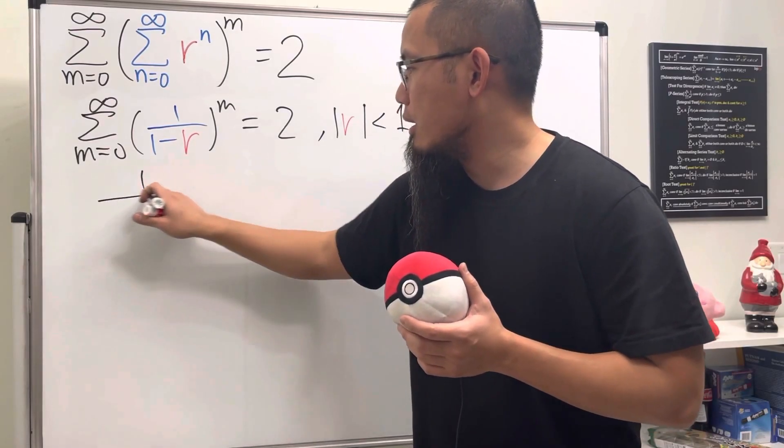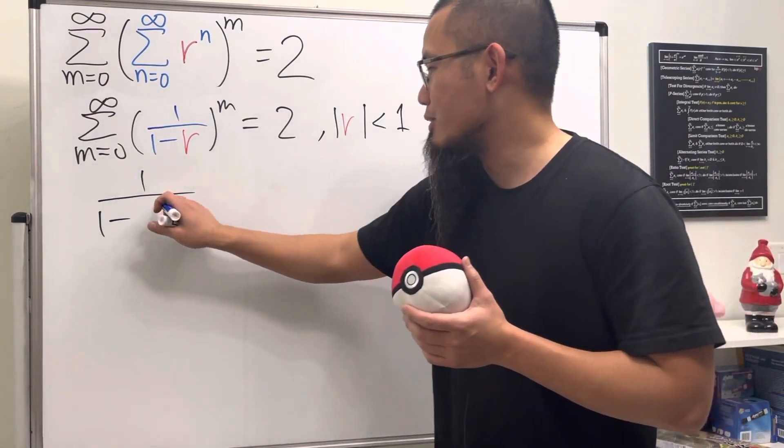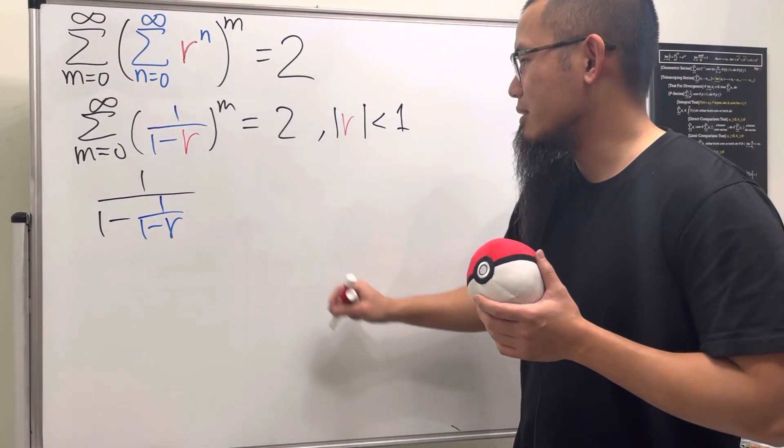Over one minus the common ratio, which is the inside, that's just one over one minus r. And then we will just have to make this equal to two.